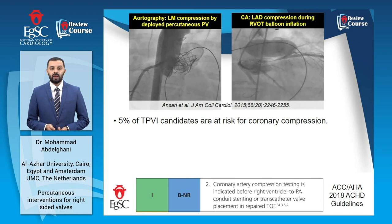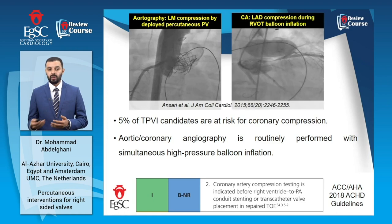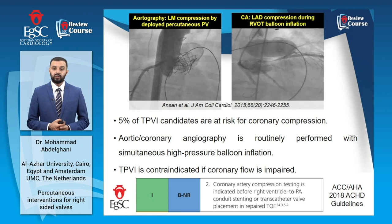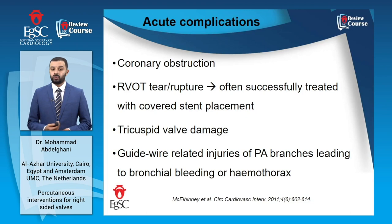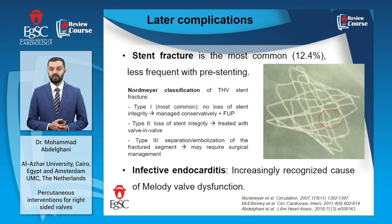The first step of the TPVI procedure is to exclude coronary artery compression, performed by doing aortic or coronary angiography simultaneously with high-pressure balloon inflation in the RVOT. If a coronary artery is compressed during this process, TPVI is contraindicated. The second step is pre-stenting, the main goal of which is to prevent valve stent fracture, especially when the Melody valve is to be used. Acute complications include coronary obstruction, RVOT tear/rupture, tricuspid valve damage, and guidewire-related injuries of the pulmonary artery and its branches. Later complications include stent fracture, especially with the Melody valve, which was more commonly seen in the era before pre-stenting was routinely adopted.